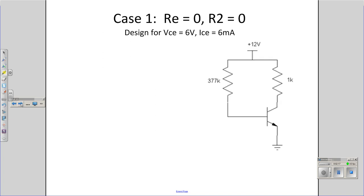Let's start with a simple case. Suppose I have the emitter resistor zero, R2 zero, and I just have this circuit right here. Let's design so that here's the collector emitter, design so that VC is 6 volts.